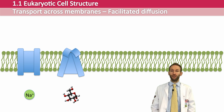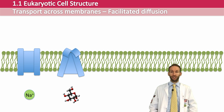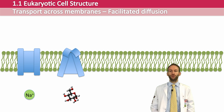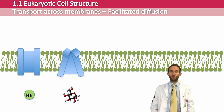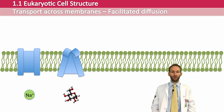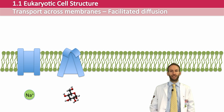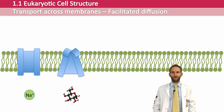Facilitated diffusion is a passive process — it doesn't require any energy. Molecules move down their concentration gradient from an area of high concentration to an area of low concentration using membrane transport proteins.